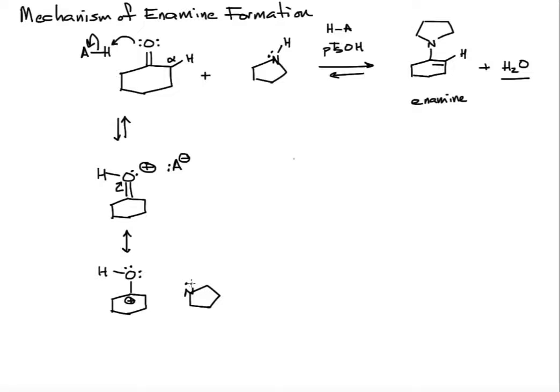Nitrogen has a lone pair. It's going to start at the lone pair and then attack here. We're forming a carbon-nitrogen bond. This now is also under equilibrium.